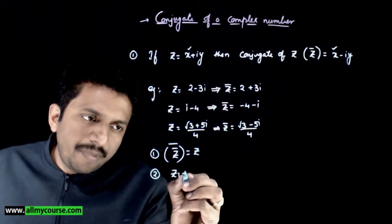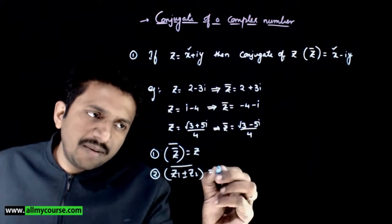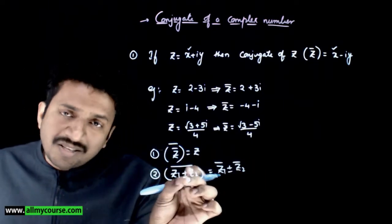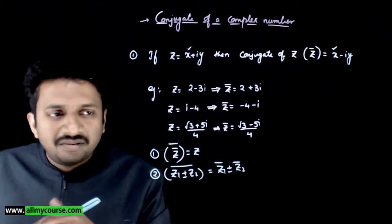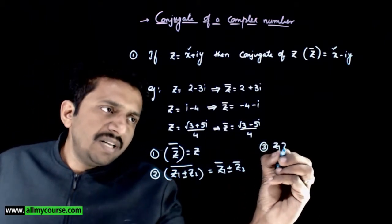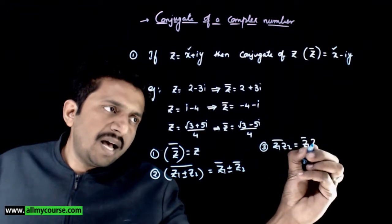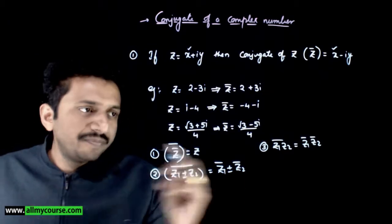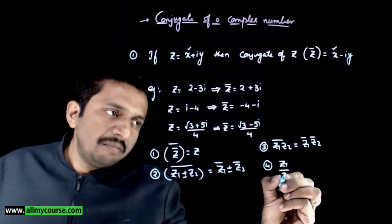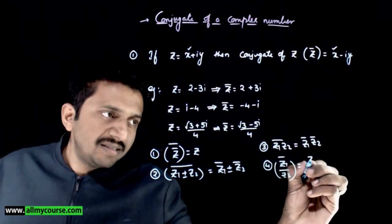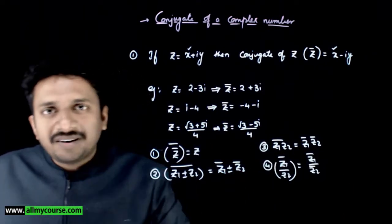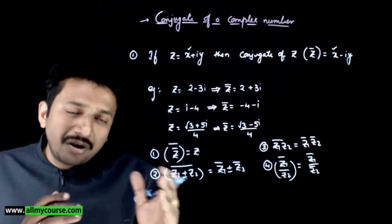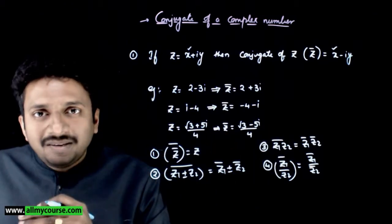Next, z₁ plus or minus z₂ whole bar can be written as z₁ bar plus or minus z₂ bar — that is, bar can be distributed over addition and subtraction. Also, z₁ times z₂ whole bar equals z₁ bar times z₂ bar, so bar can be distributed over multiplication. And z₁ by z₂ whole bar equals z₁ bar by z₂ bar, so bar can be distributed over division as well — over all four operations.